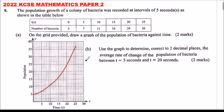Part (b): Use the graph to determine, correct to two decimal places, the average rate of change of the population of the bacteria between t equals 5 and t equals 20. So this is where we have t equals 5, and this is where we have t equals 20.